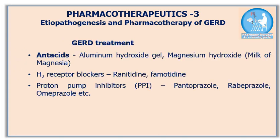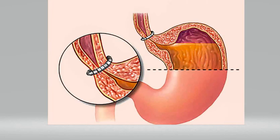The treatment of GERD includes antacids and H2 receptor blockers like ranitidine and famotidine, and proton pump inhibitors like pantoprazole, rabeprazole, and omeprazole. Please note that H2 receptor blockers and proton pump inhibitors should not be taken together.